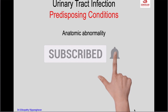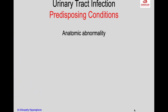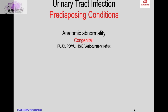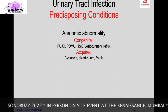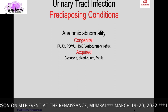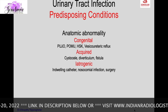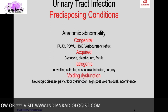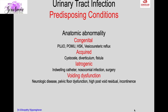Predisposing conditions are anatomical abnormalities which cause stasis of urine, predisposing to infection. These may be congenital like pelviureteric junction obstruction, primary obstructive megaureter, horseshoe kidney, or vesicoureteric reflux, or acquired like cystocele, vesical diverticulum, or fistula. Iatrogenic causes include indwelling catheter, nosocomial infection, or post-surgical. Voiding dysfunction from neurological disease, pelvic floor dysfunction, high post-void residual urine, enlarged prostate, and incontinence are also predisposing.